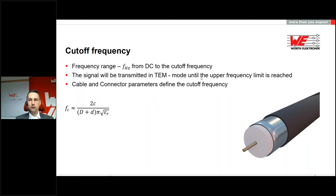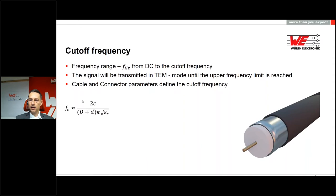The first parameter is the cutoff frequency, because this defines what frequencies you are able to transfer via the connector or transmission system. It's the point where the signal will still be transmitted in TEM mode until the upper frequency limit is reached. The cable and connector parameters define the cutoff frequency, which is calculated by F = 2C divided by (inner diameter of outer shell plus outer diameter of inner conductor) multiplied by π multiplied by the square root of epsilon R — the relative permittivity of the dielectric material inside the coaxial system.